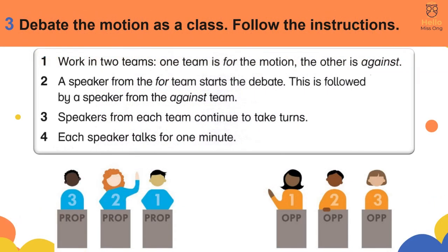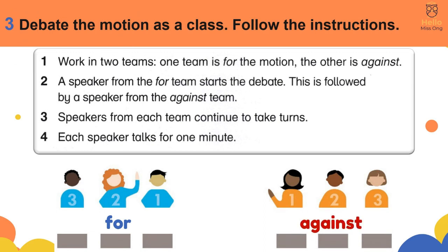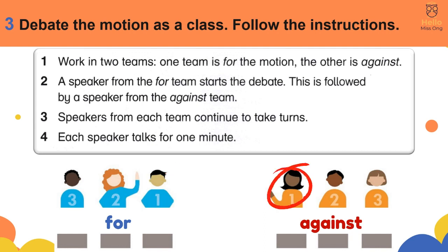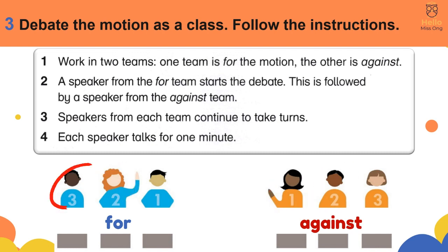Activity 3: Debate the motion as a class. Work in two teams — one team is for the motion, the other is against. A speaker from the 'for' team starts the debate, followed by a speaker from the 'against' team. Speakers from each team continue to take turns, and each speaker talks for one minute.